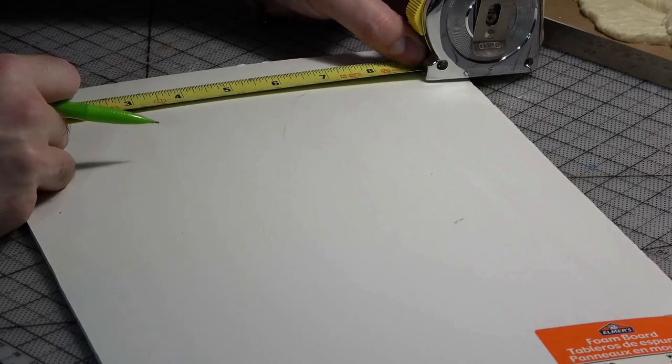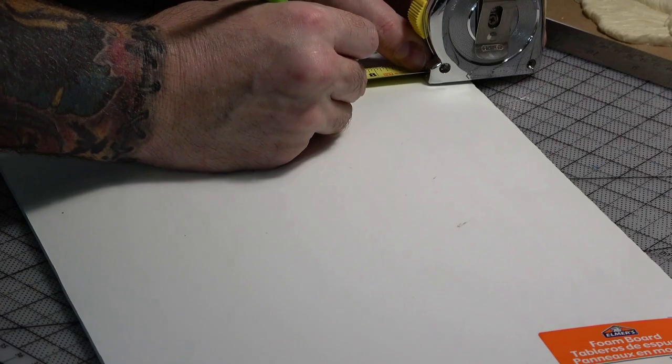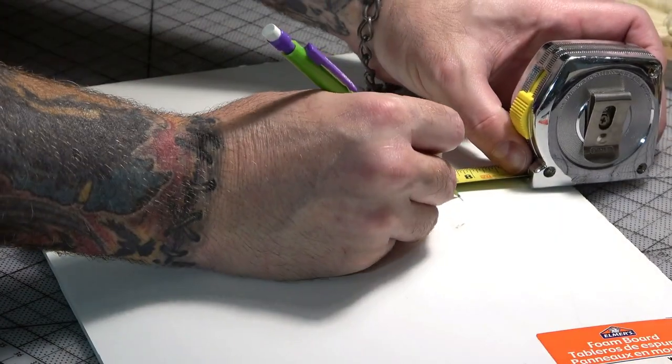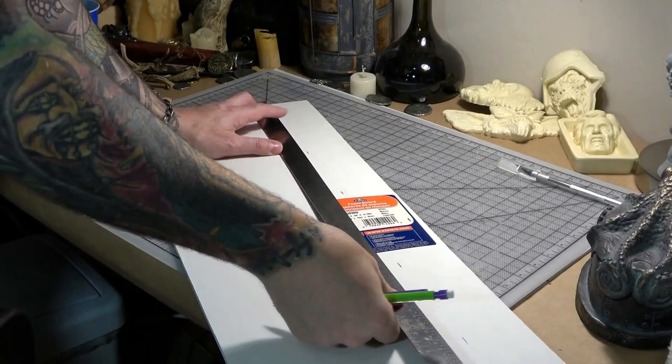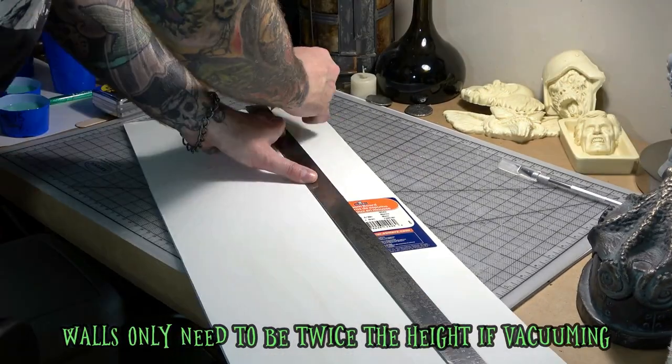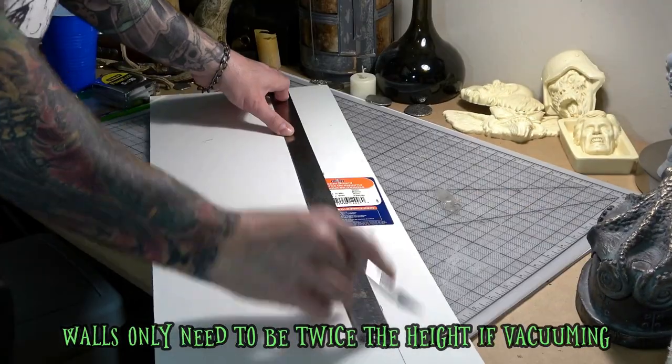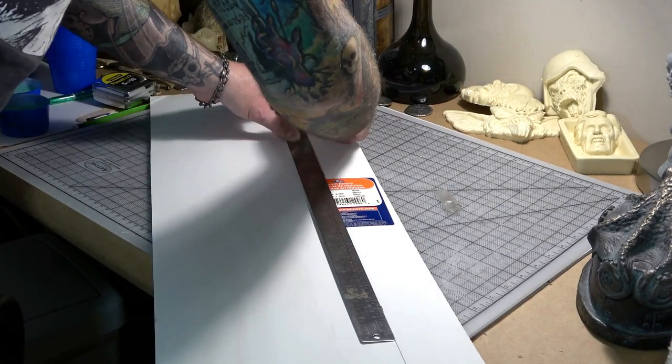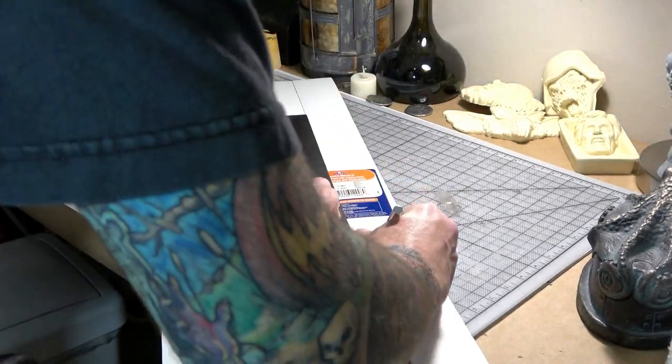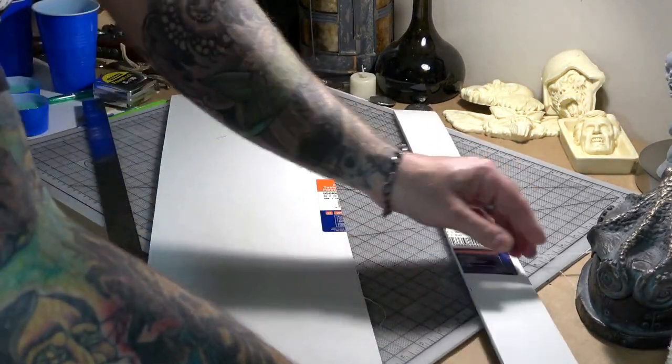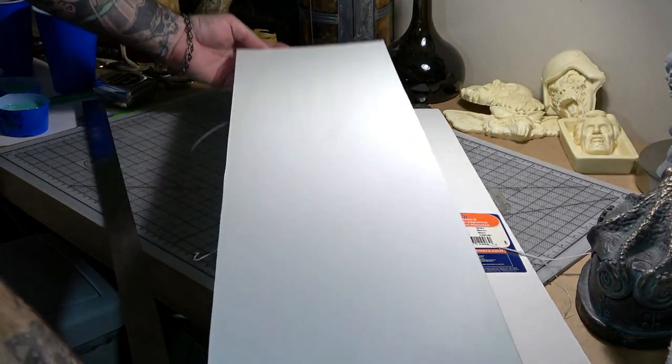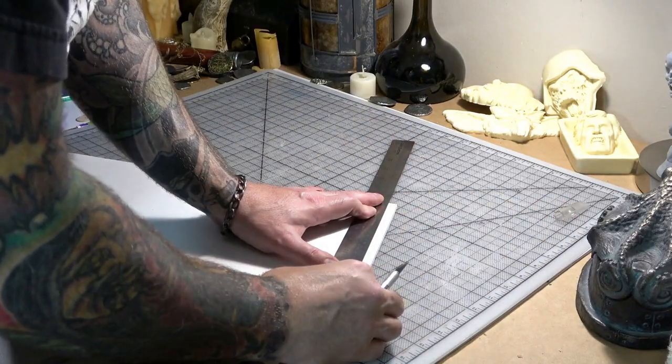Now it's time to make our foam core walls. I measure about seven and a half inches, which is over twice the height of the silicone volume and will allow for expansion when vacuuming it. After I mark the height of the walls, I trim off the extra with an exacto knife.